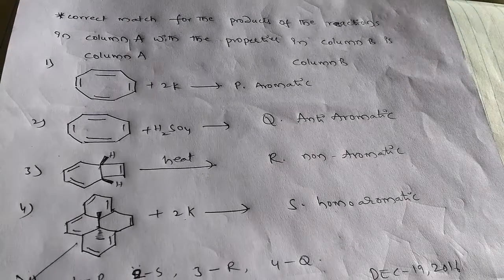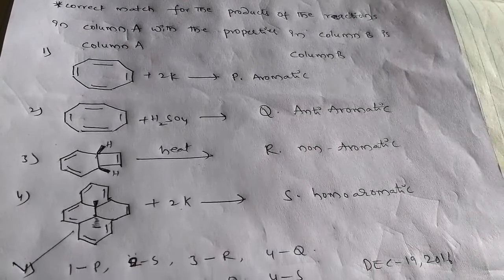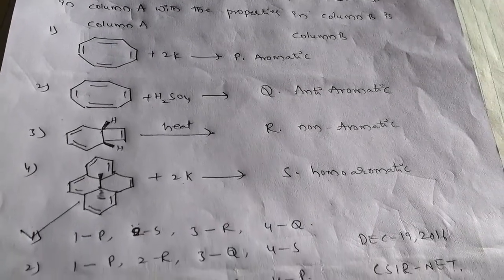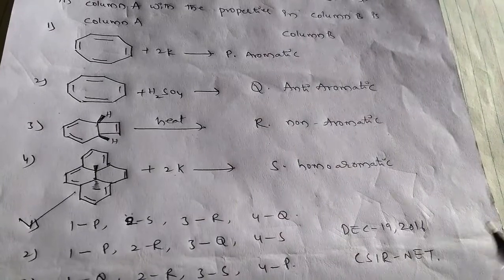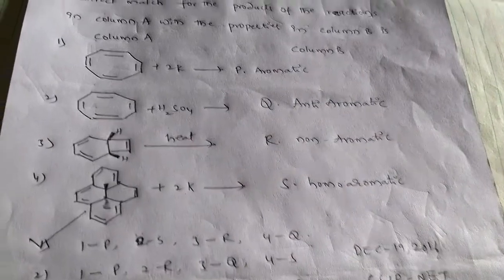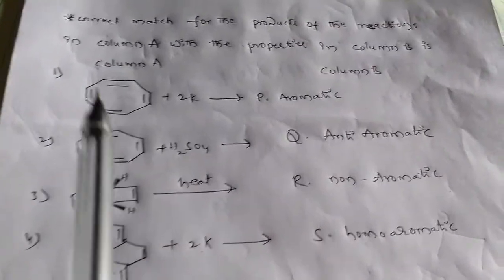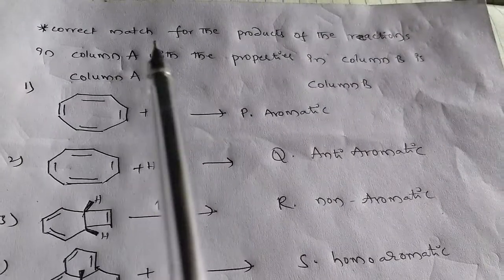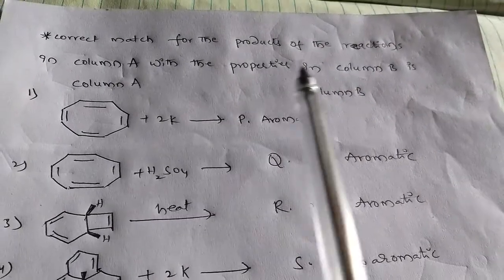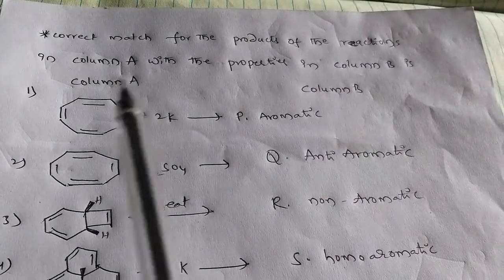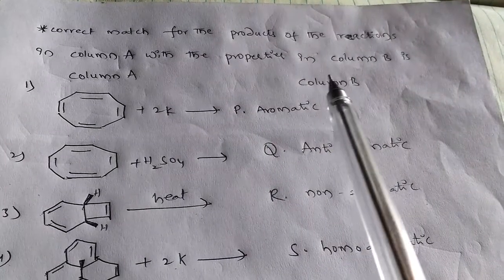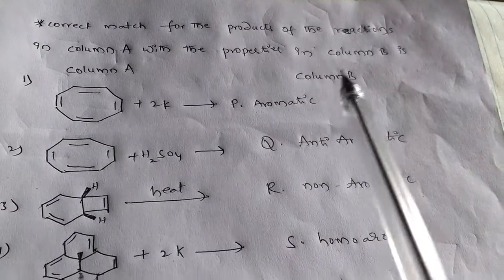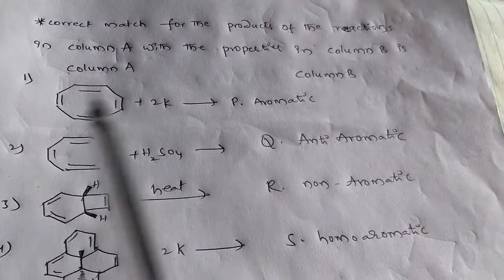Hi, this is Chiranjeevi. This question appeared in December 2016 CSIR NET. The question is: find the correct match for the products of the reactions in column A with the properties in column B.